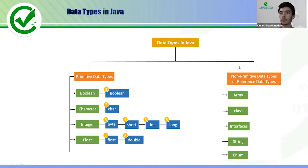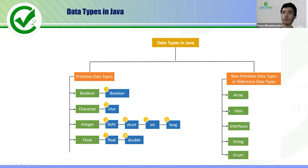For non-primitive data types, there are arrays — which can hold many values of the same data type. There is also class, which is non-primitive because its memory size can vary. There is also interface, String, and enums. You may mention arrays, String, and all of them as objects when answering.